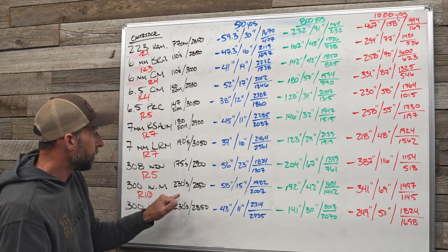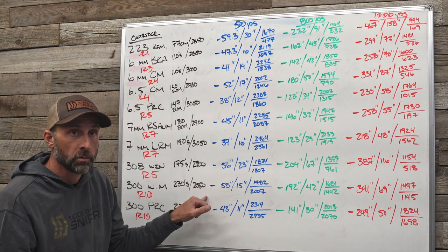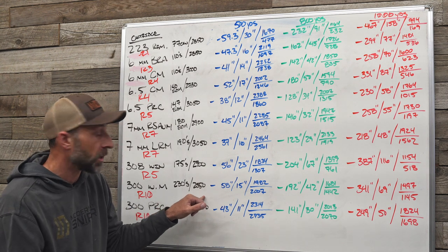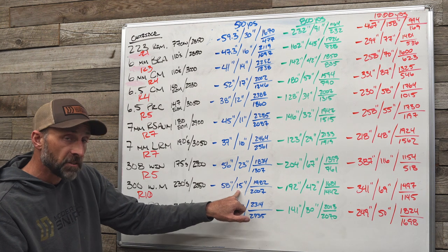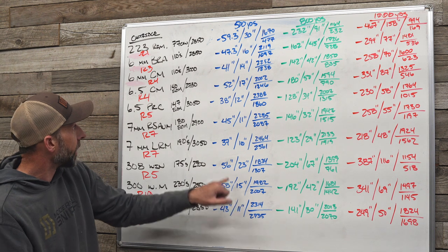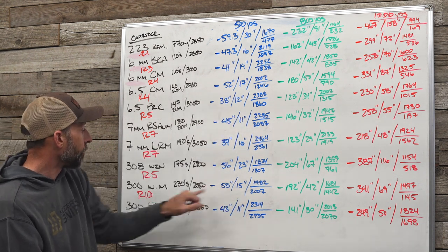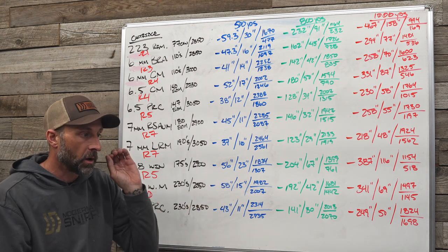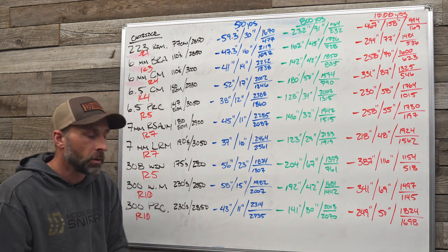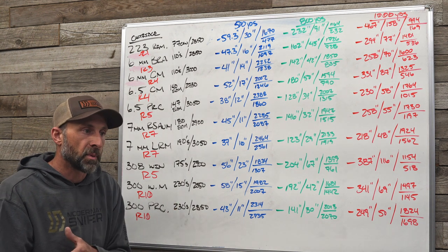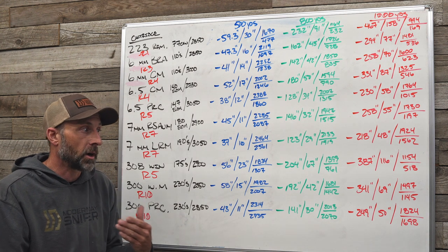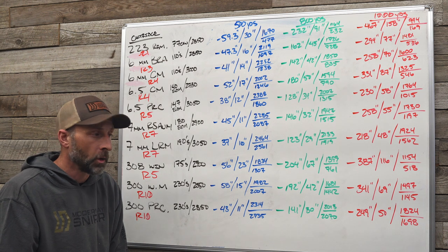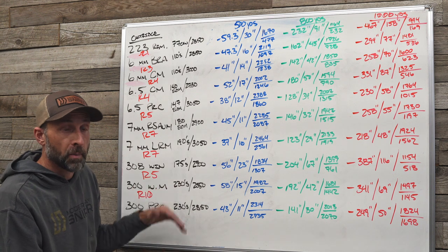Jumping into the magnums — the 300 Win Mag load here with 230-grain Berger Hybrids is slow at 2,550 fps out of a 20-inch barrel with a suppressor, but has phenomenal performance due to the aerodynamic efficiency of that bullet. I get 15 inches of wind drift at 500 yards — not as good as the 6.5 PRC — and it has far more recoil, almost twice as much as the 6.5 PRC. If you're looking for a hunting rifle in general, probably want to shy away from those big 30-cal magnums unless you're hunting with a friend who can spot your impacts or you're really proficient with that rifle.